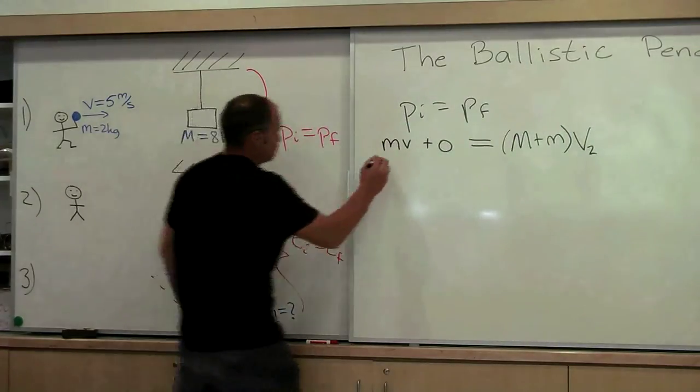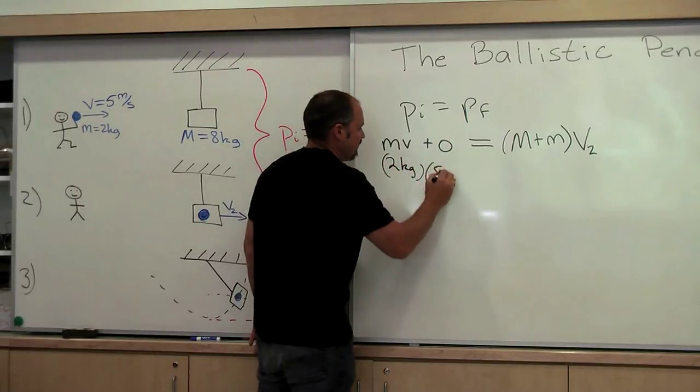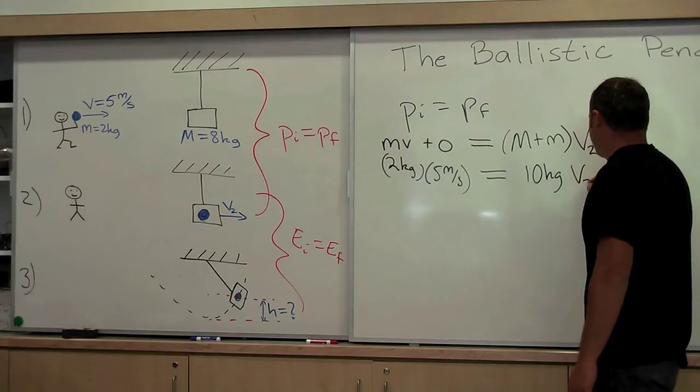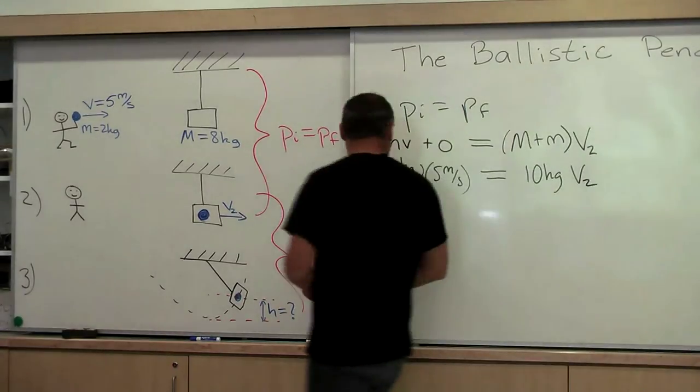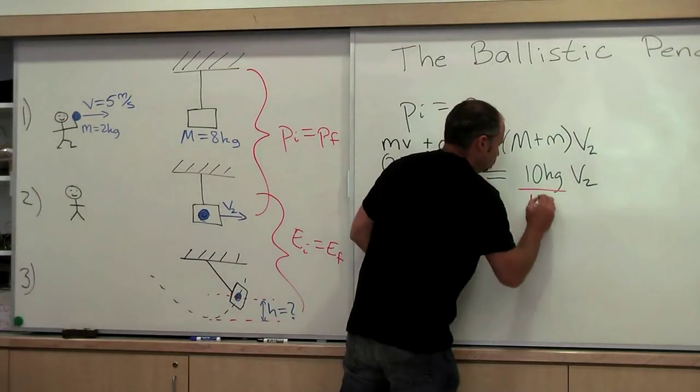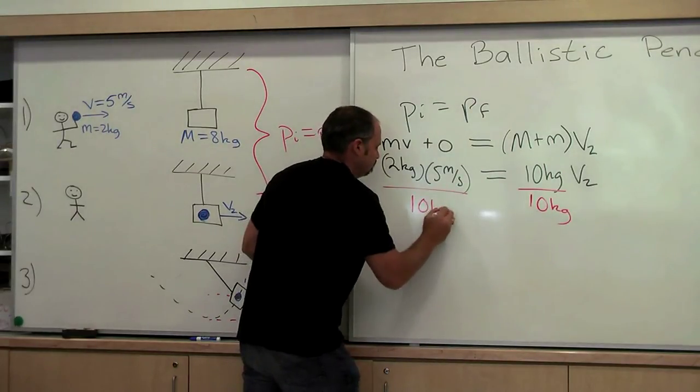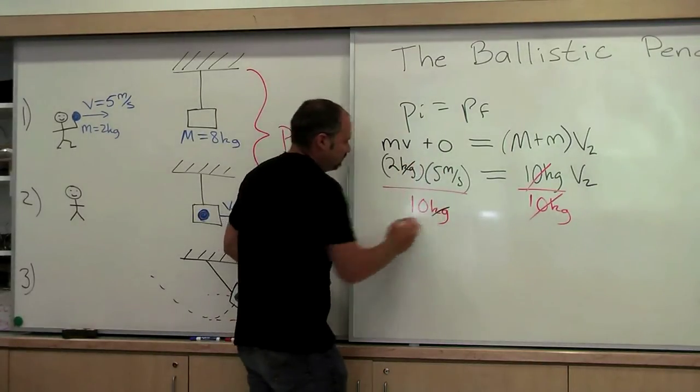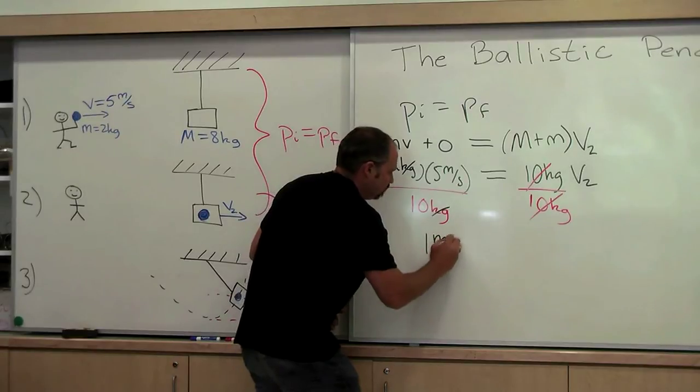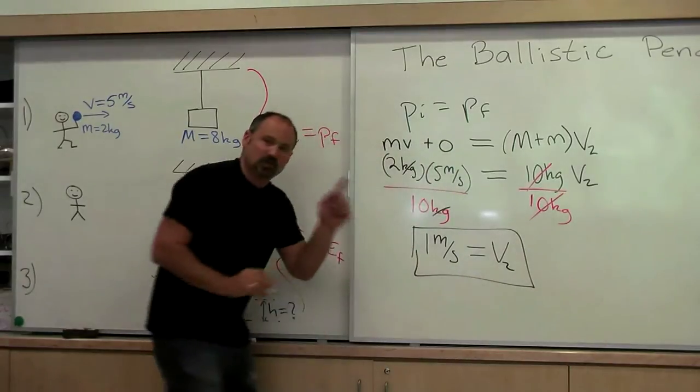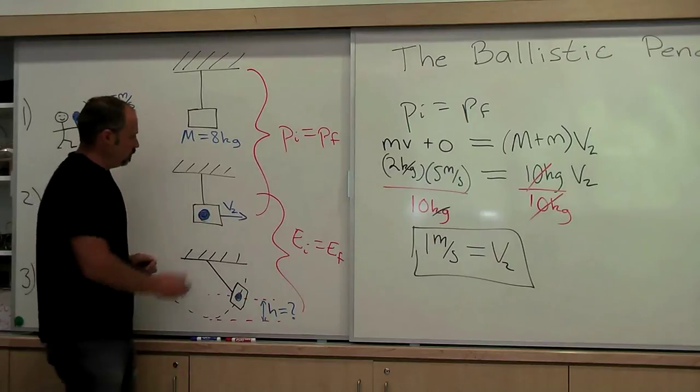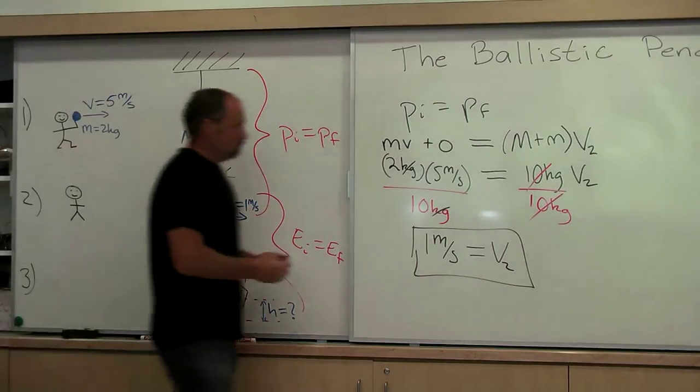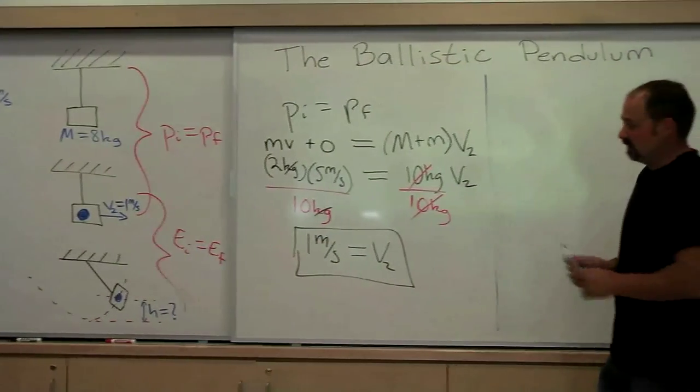Now we can solve the problem by plugging in numbers. The mass is two kilograms. Speed of this guy is five meters per second. And then on the other side well eight plus two is ten kilograms. And we want to find v2 over here. Now right away I can divide both sides by ten kilograms. And if I carry this out, it cancels. Two times five is ten. Ten divided by ten is one. And don't forget the units cancel here. So then we have one meter per second is equal to v2. So now we know the speed of the block combined with this blob is one meter per second.